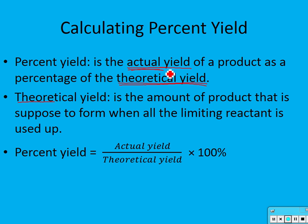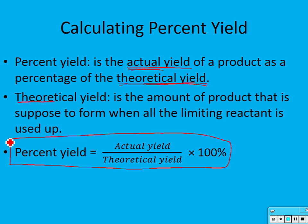Here's how you find percent yield using this formula: percent yield is equal to the actual yield divided by theoretical yield, and then you times that number by 100 to get a percentage. So we take the actual yield from the reaction divided by what we're supposed to get in theory, then times it by 100.